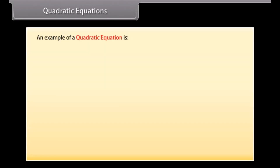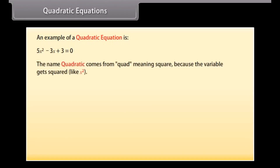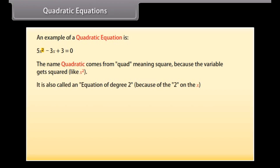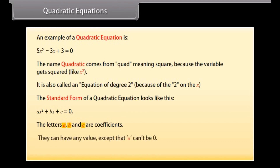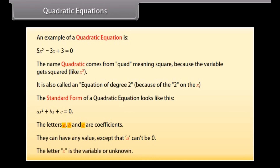An example of a quadratic equation is shown here. The name quadratic comes from 'quad', meaning square, because the variable gets squared, like x squared. It is also called an equation of degree 2, because of the 2 on the x. The standard form of a quadratic equation looks like this: ax² + bx + c = 0. The letters a, b, and c are coefficients — they can have any value, except that a cannot be zero. The letter x is the variable or unknown.